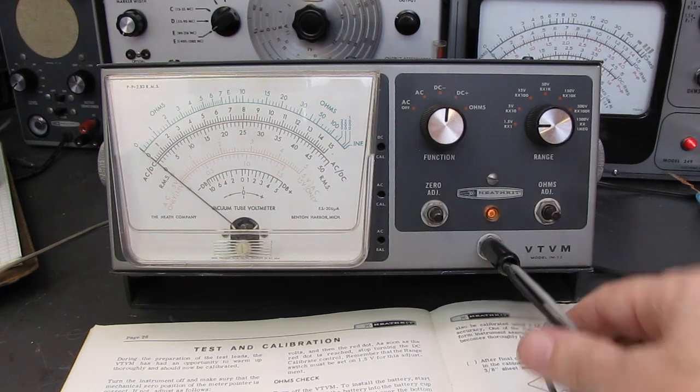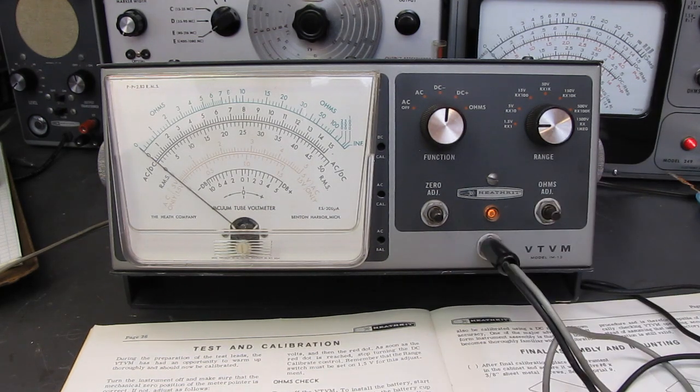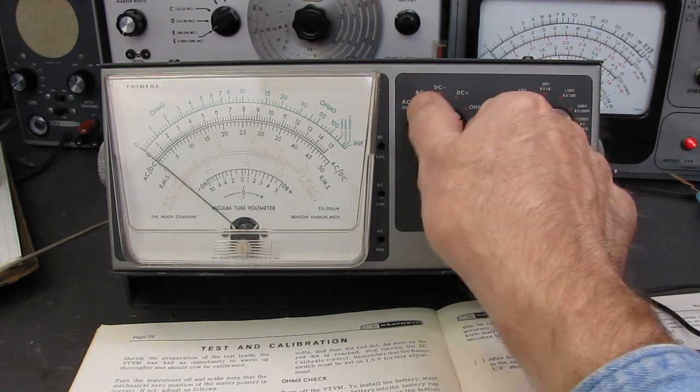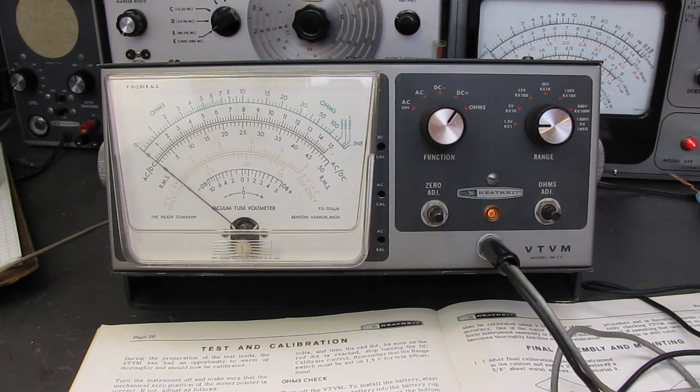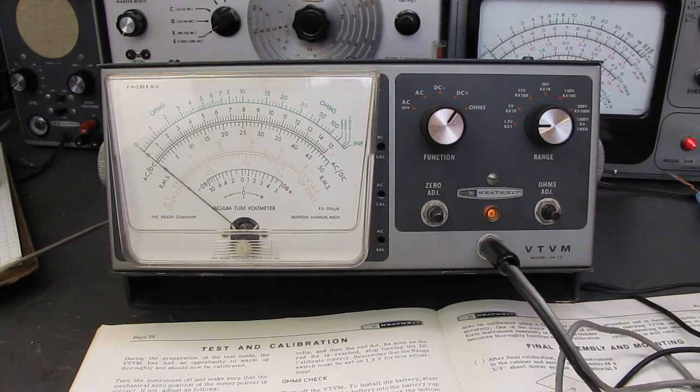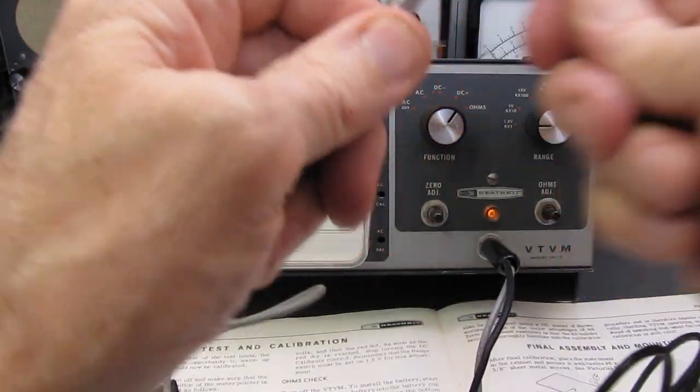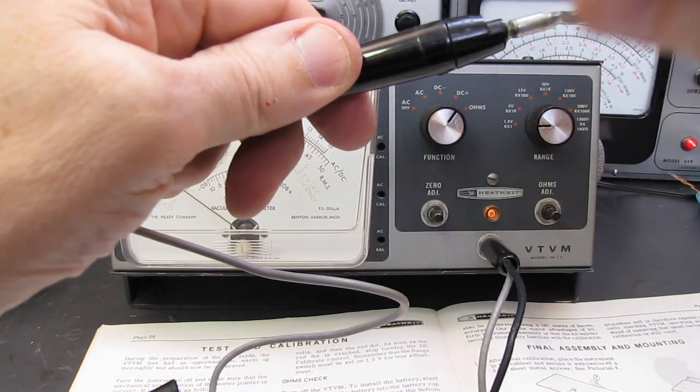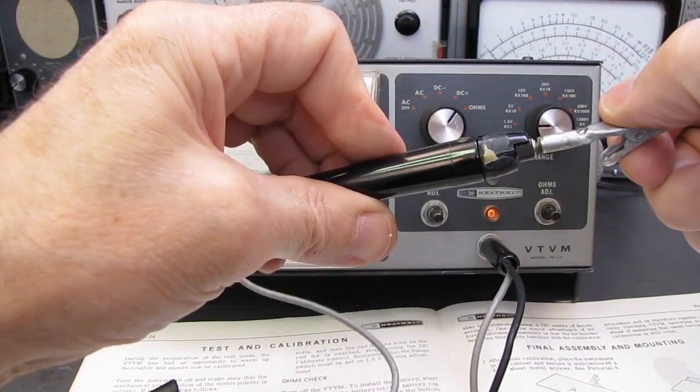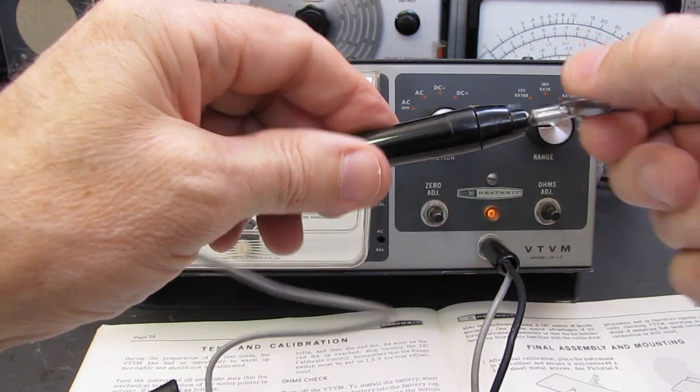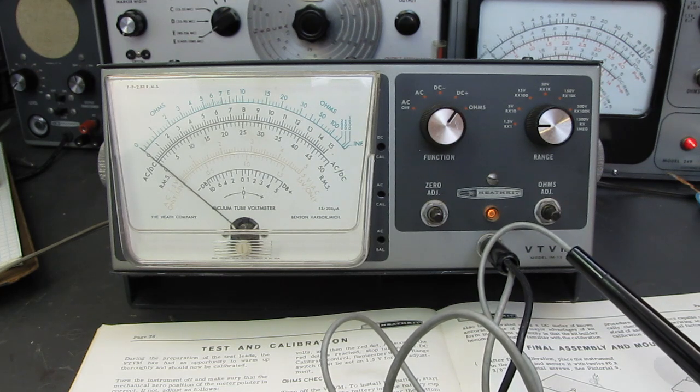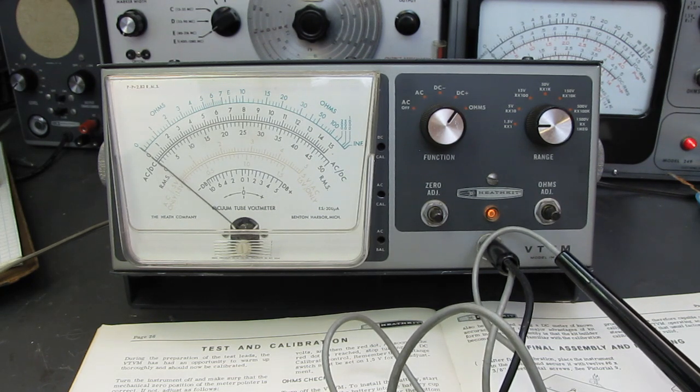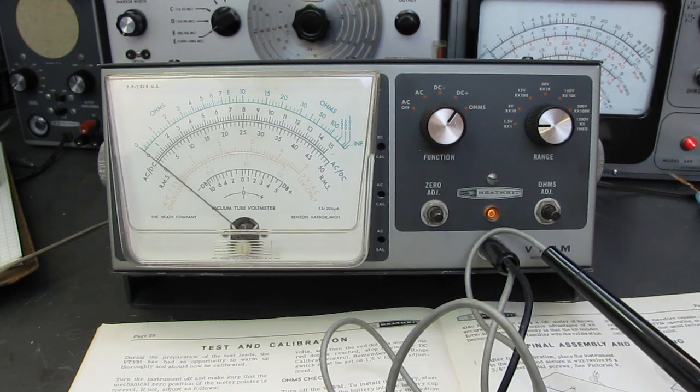If there's an appreciable zero shift of more than two divisions on the scale, it should be regarded as merely an indication that additional aging of the 12AU7 is required. And it says leaving the instrument turned on for a period of 48 hours or more is probably a good practice. DC calibrate. Insert the test lead into the phone plug. It's in there. I'm going to set the function switch to plus DC.